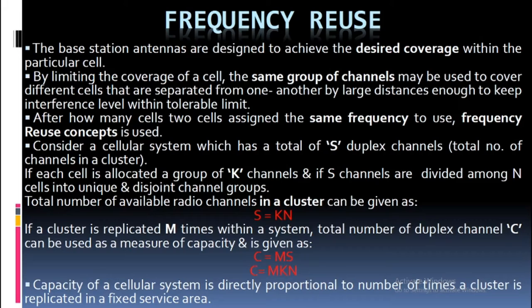Consider a cellular system which has a total of S duplex channels. If each cell is allocated a group of k channels and S channels are divided among n cells into unique and disjoint channel groups, the total number of available radio channels in a cluster is given as S = kn. If a cluster is replicated m times within a system, the total number of duplex channels C, used as a measure of capacity, is given as C = mS = mkn. Capacity of a cellular system is directly proportional to the number of times a cluster is replicated in a fixed service area.